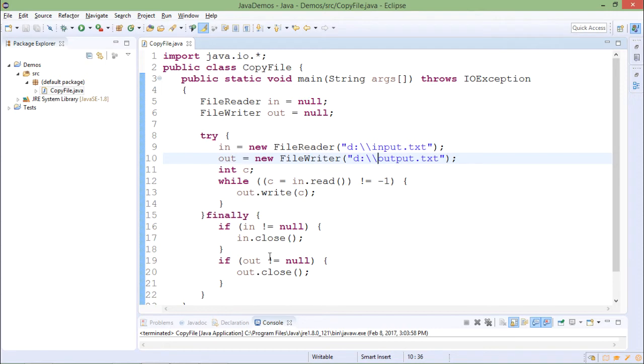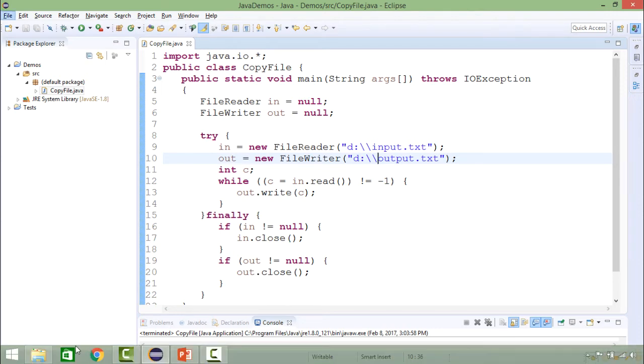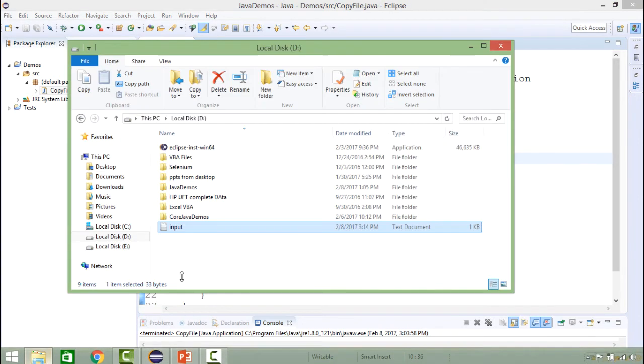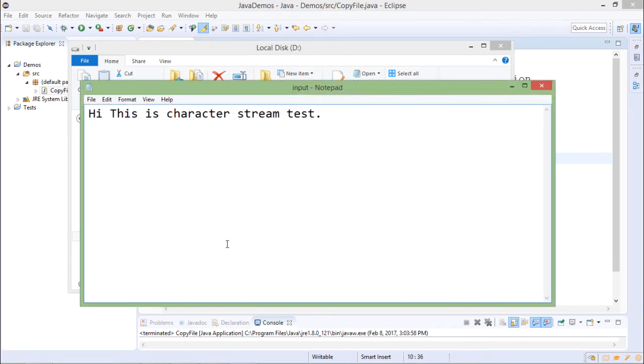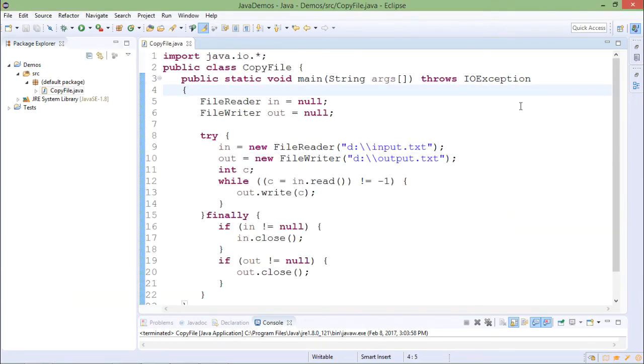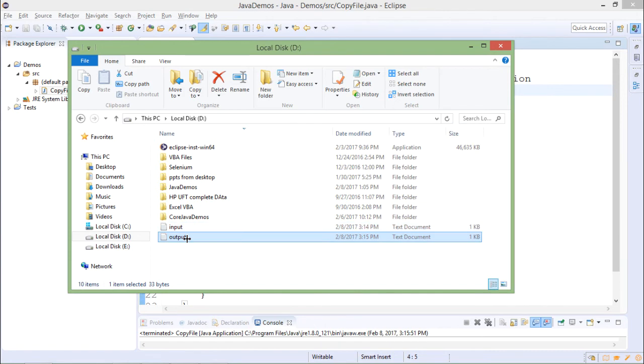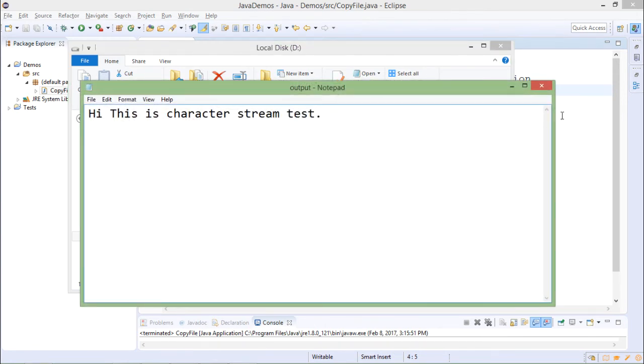Both files are closed at the end. So now you can see that on D drive single file is there which is input.txt. Contents are Hi this is character stream test. Now after I run the code one output.txt is created and the contents are copied.